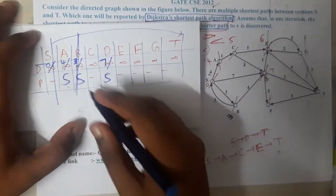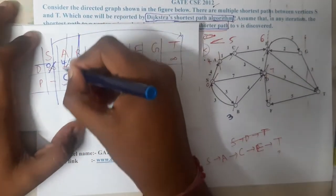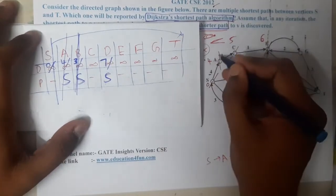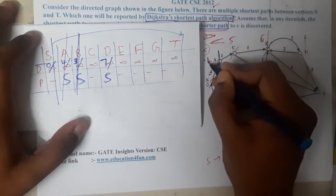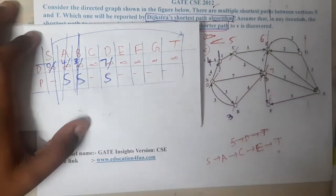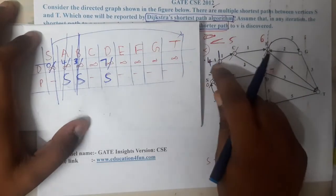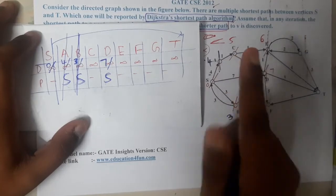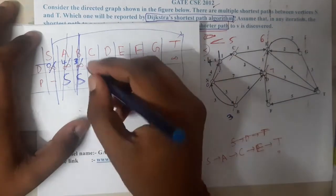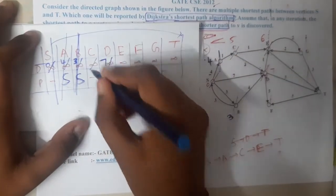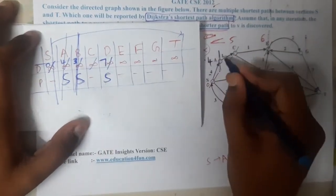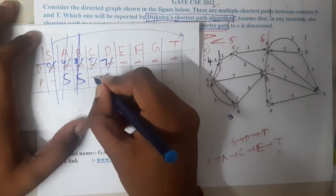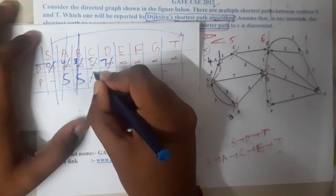The next minimum is a with distance 4. From a, we can go to c at cost 1, so 4+1=5. The distance of c is updated to 5 with parent a.